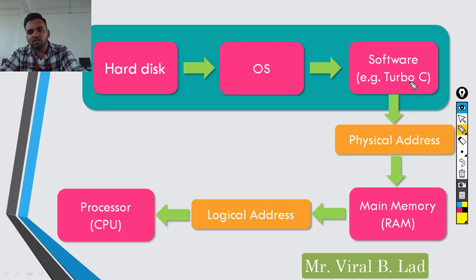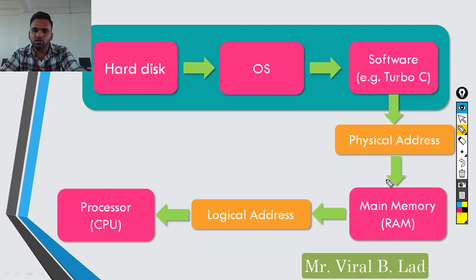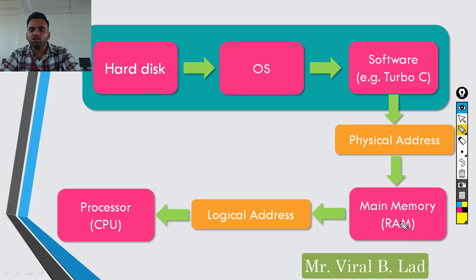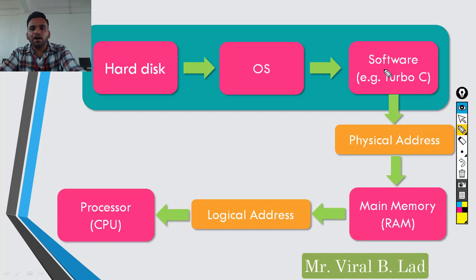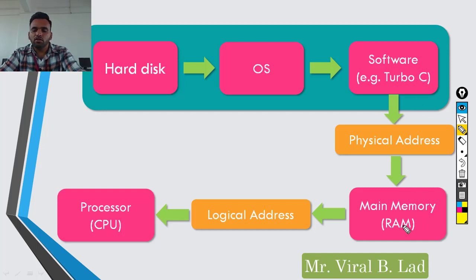From the hard disk, the information that goes to RAM — the address through which it goes is called the physical address. As we studied in the last lecture, the physical address is the actual address in main memory. The operating system manages what information goes into main memory, and which application needs to be executed.